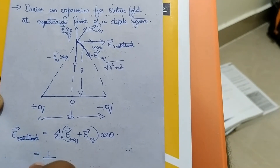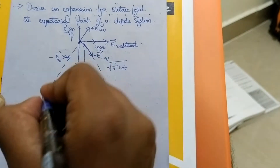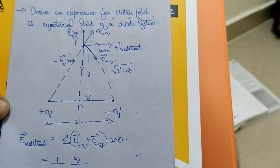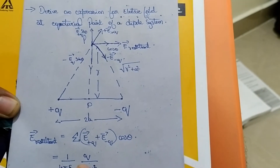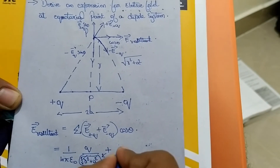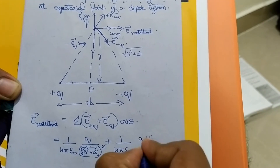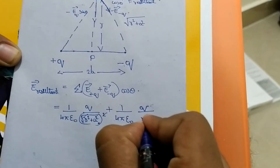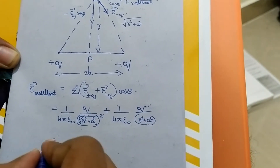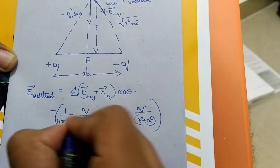From Coulomb's law, the electric field is one over four pi epsilon naught times Q divided by the square of the distance between the charge and the point, which is r squared plus a squared. The square roots cancel, giving one over four pi epsilon naught times Q divided by r squared plus a squared. Combining both charges gives 2Q times cosine theta all over four pi epsilon naught times r squared plus a squared.